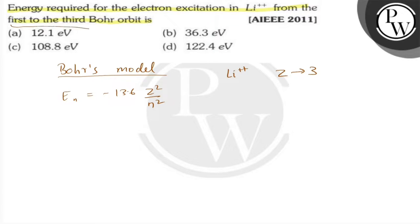From the first to the third Bohr orbit, that means n equals 1 to n equals 3. The energy will be E final minus E initial.